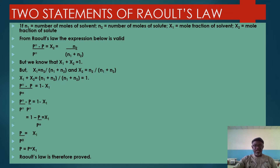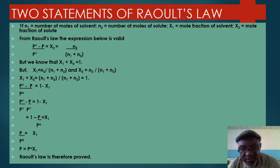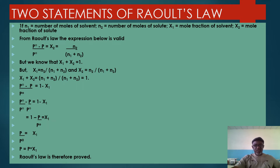The mole fraction x₂ = N₂ / (N₁ + N₂). We know that x₁ + x₂ = 1, since the sum of the mole fractions of the constituents is always equal to 1, where x₁ is the solvent and x₂ is the solute. Substituting, instead of writing the relative lowering of vapor pressure equal to x₂, we write 1 − x₁, and solving we arrive at P = P⁰x₁. This is the first statement of Raoult's Law — we've been able to prove the first statement from the second statement.